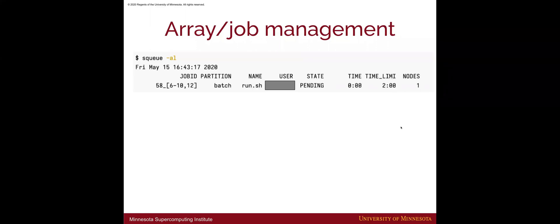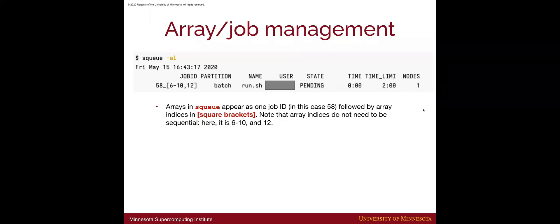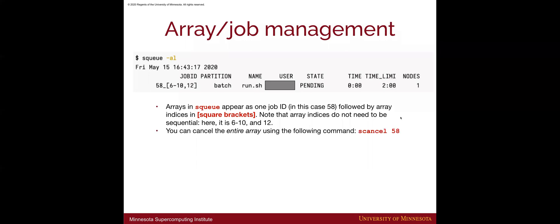Some quick basics of array job management. If you look at your jobs using sq, arrays appear as just one job ID — in this example screenshot, it is job ID 58. The array indices come after an underscore and are shown in square brackets. This example shows a non-sequential array with indices 6 through 10 and also 12. You can cancel the entire array using 'scancel 58', the whole job ID, or cancel just one individual array job using its specific index.